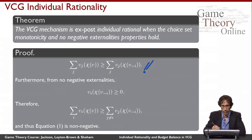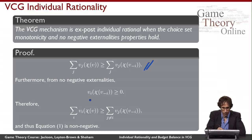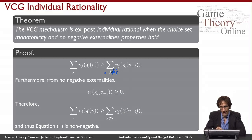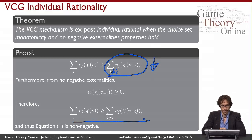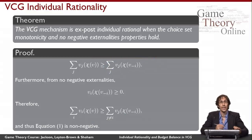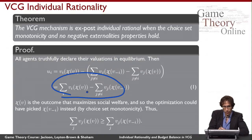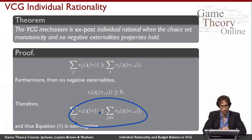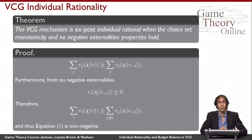We can also use no negative externalities: the value agent I has for the choice made when he's not present is greater than or equal to zero. That means if I change the sum to exclude agent I, I've removed a non-negative number, so the whole expression got smaller and the inequality still holds. That's exactly what we wanted to prove: agent I's utility is this expression, and we've shown it is non-negative — so we do obtain individual rationality.